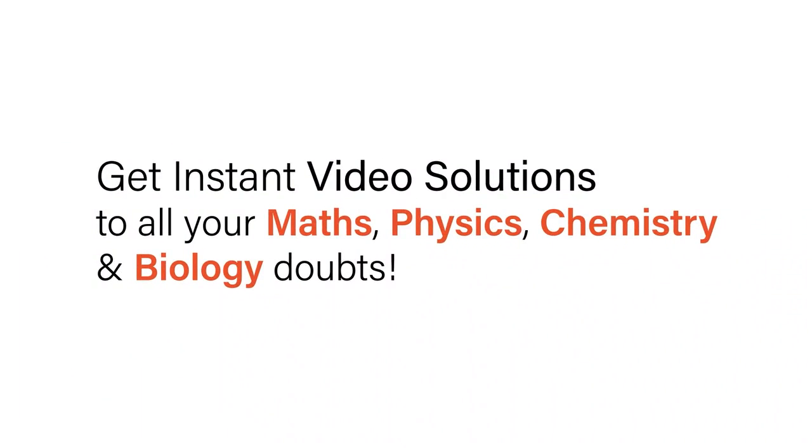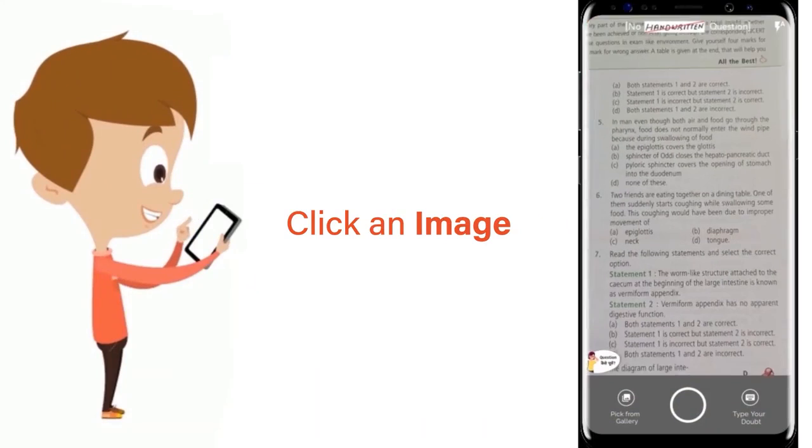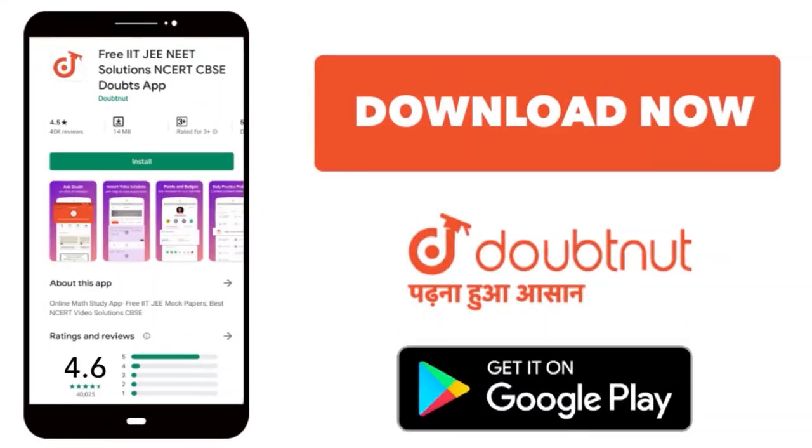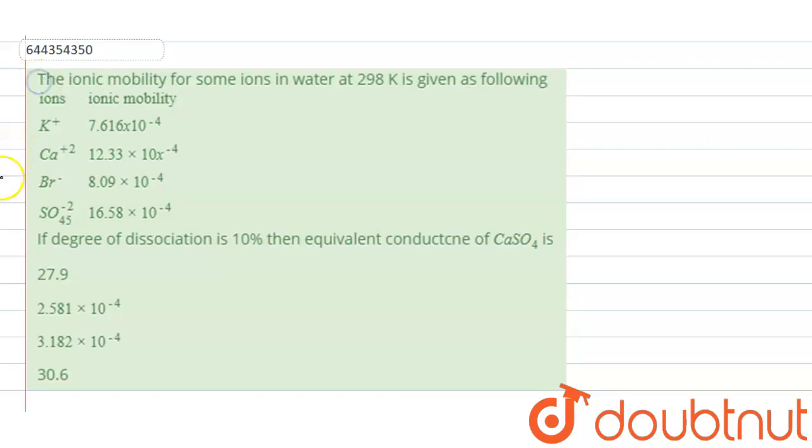With Doubtnet, get instant video solutions to all your maths, physics, chemistry and biology doubts. Just click the image of the question, crop the question and get instant video solution. Download Doubtnet app today. The question is the ionic mobility for some ions are given as the following.